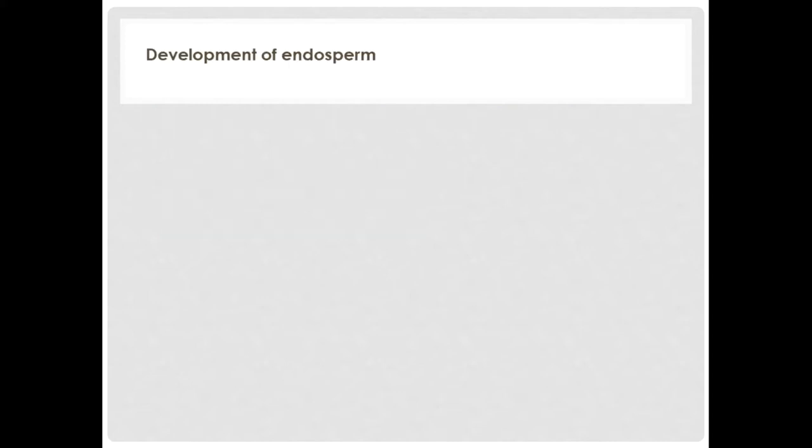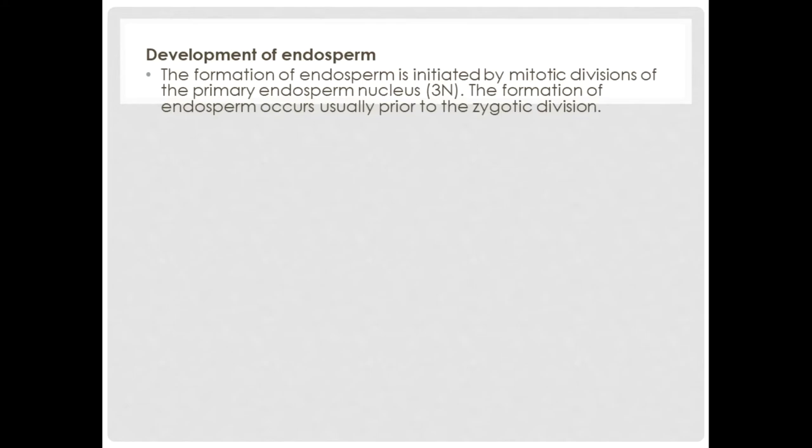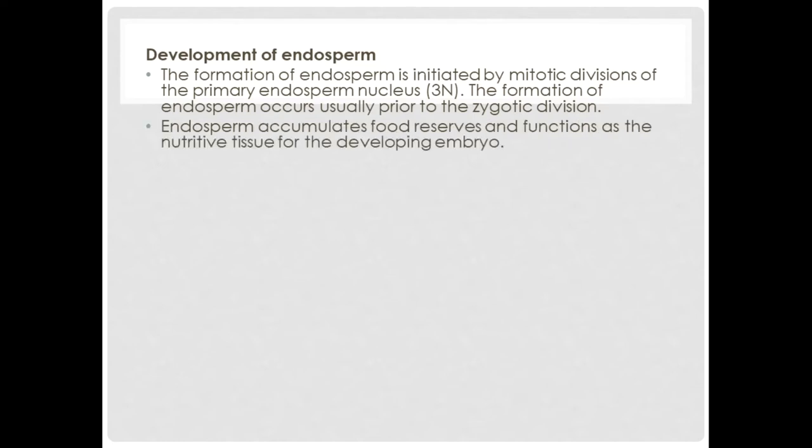The formation of the endosperm is initiated by mitotic divisions of the primary endosperm nucleus. The formation of the endosperm occurs usually prior to the zygotic division. The reason why the endosperm forms first is that it will supply food to the developing embryo. Endosperm accumulates food reserves and functions as the nutritive tissue for the developing embryo.